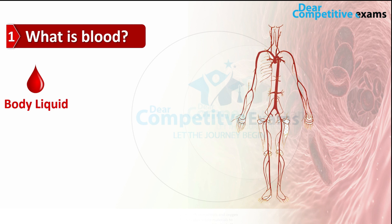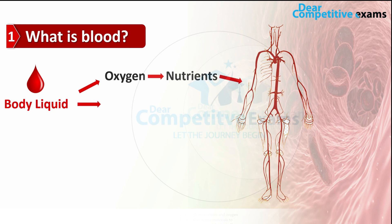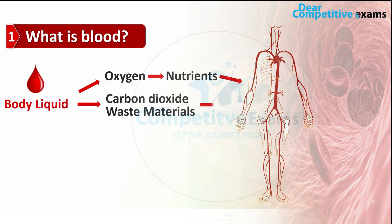Blood is a fluid that circulates in the circulatory system of humans and other vertebrates. It delivers the required things like nutrients and oxygen to the cells, and also transports metabolic waste products away from those same cells. Blood cells carry carbon dioxide and other waste materials to the lungs, kidneys, and digestive system to be removed from the body.